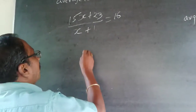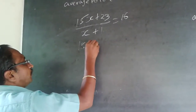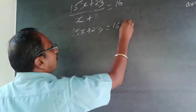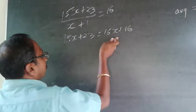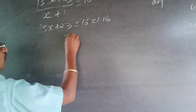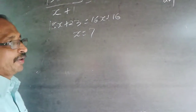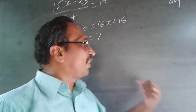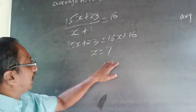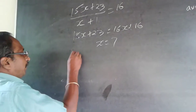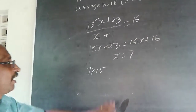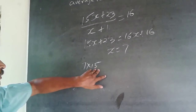Now solving this: 15x plus 23 will be equal to 16(x plus 1), which gives 15x plus 23 equals 16x plus 16. So x will be equal to 7. Now that I know the number of matches played is 7, 7 times 15 will be the number of runs scored up till the previous match.